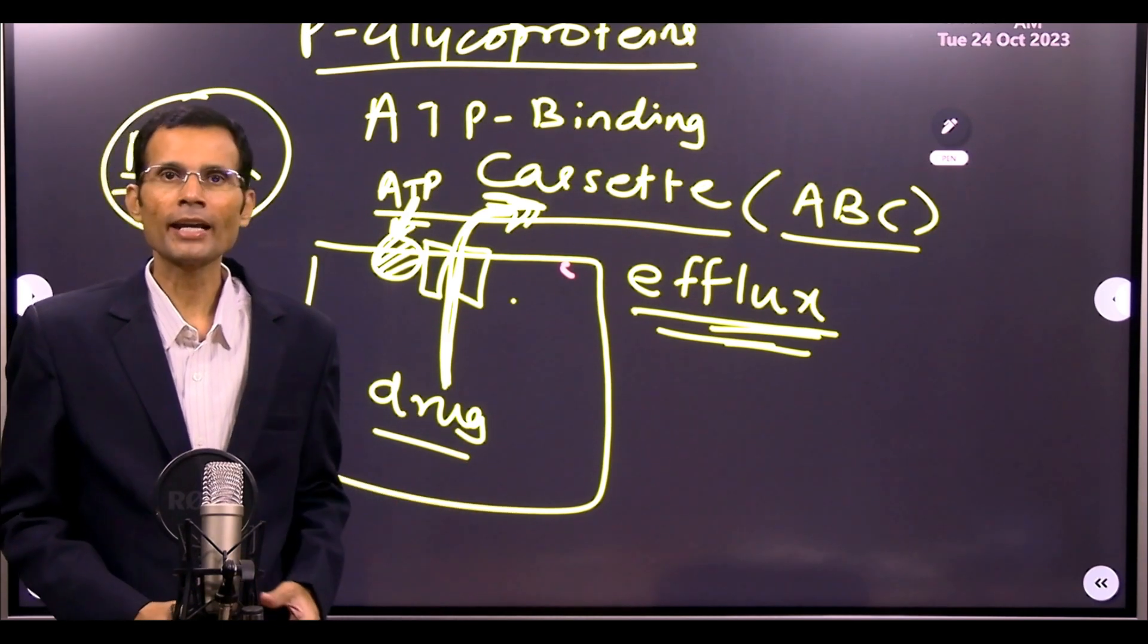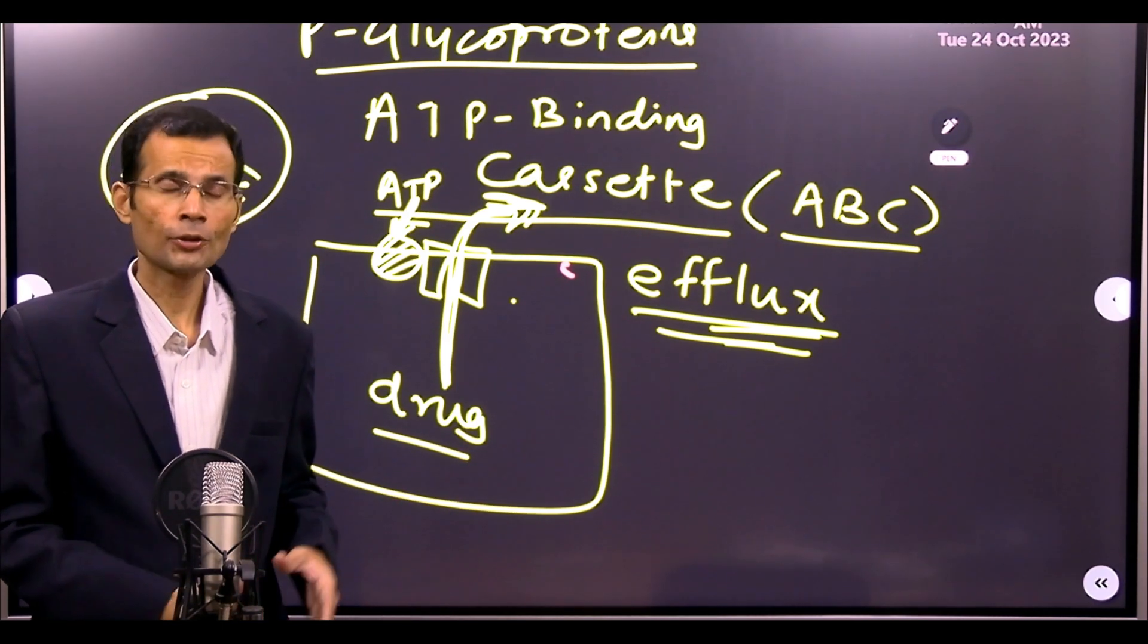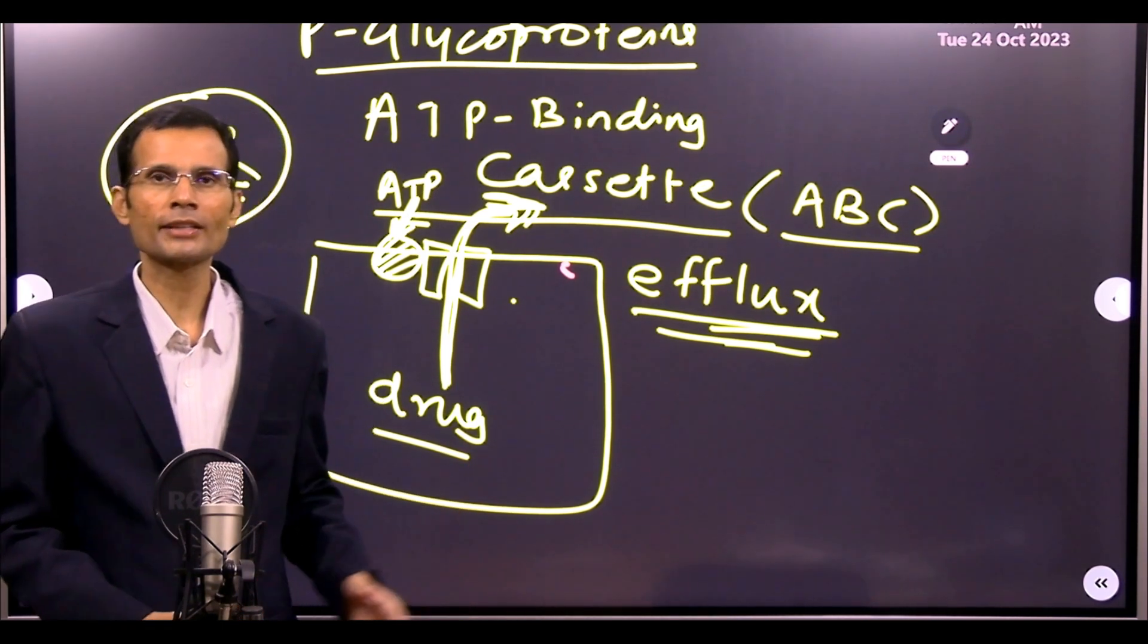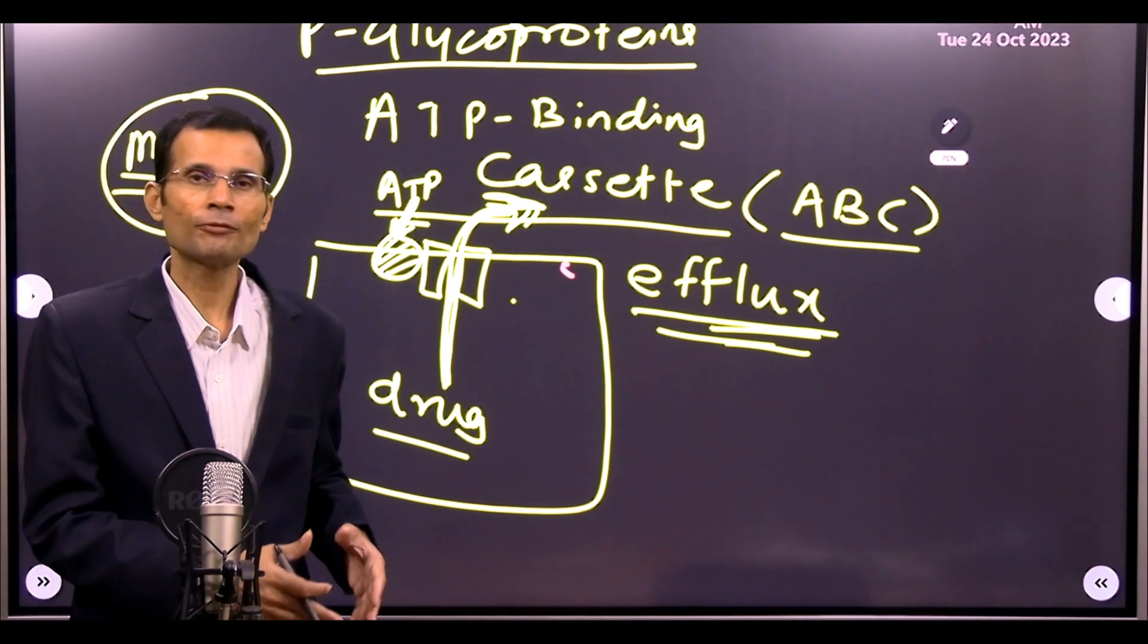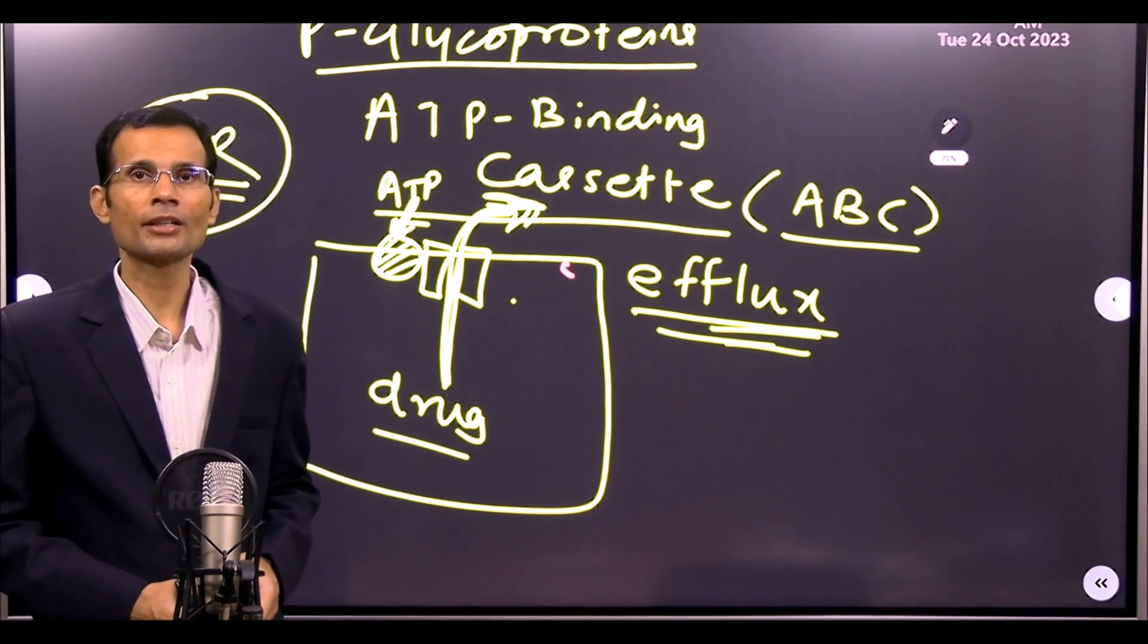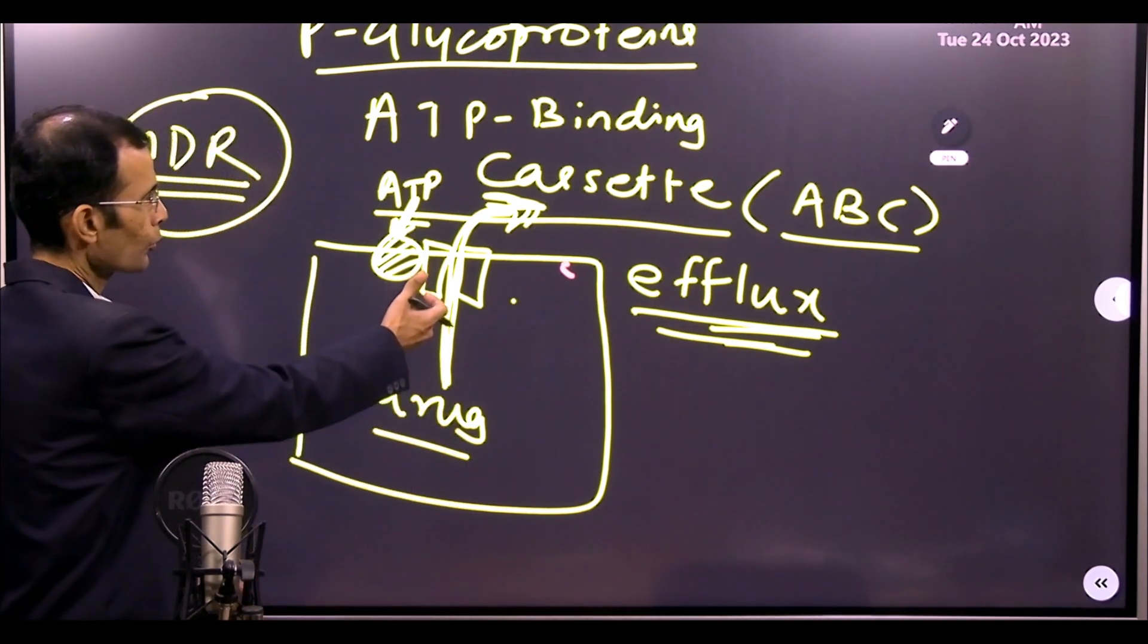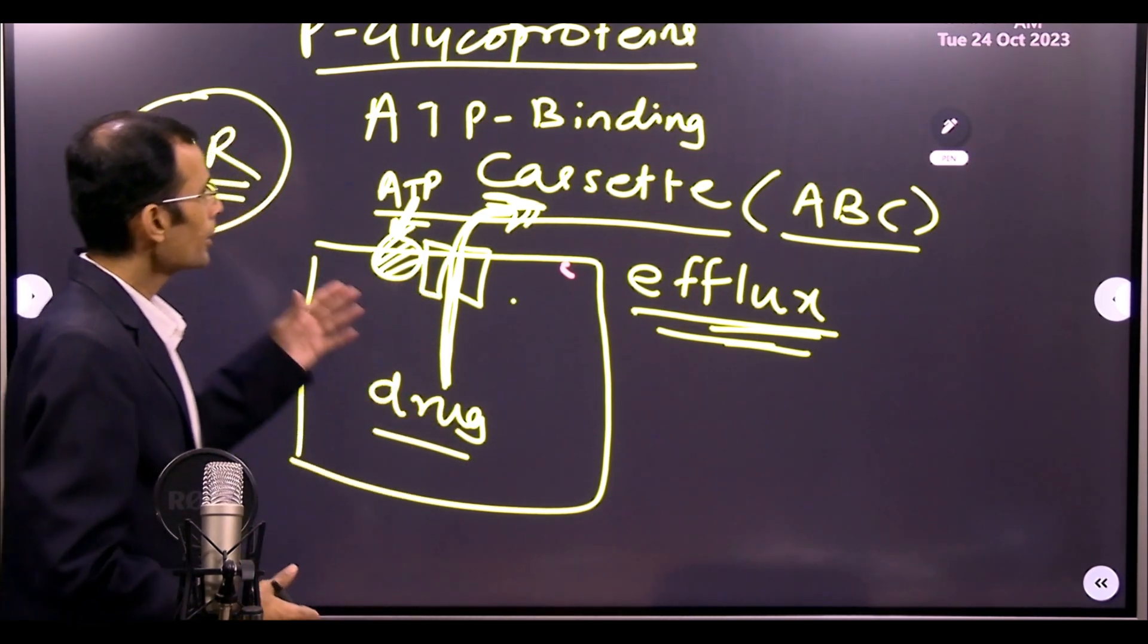Normally they are expressed in certain cells. For example, SUR, sulfonylular receptor, is said to be of this type. Or the other types like CFTR, cystic fibrosis transmembrane conductor regulator which acts as a chloride channel.